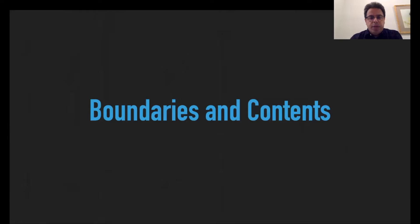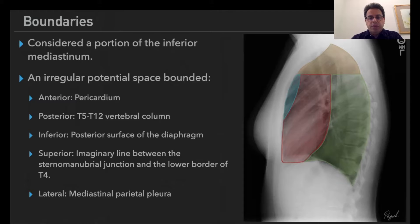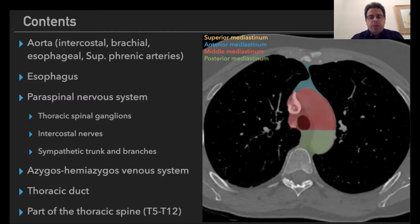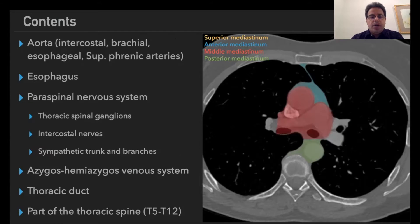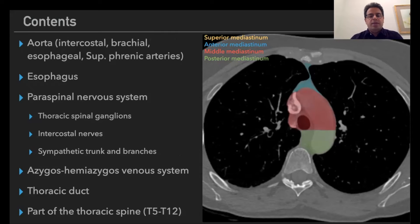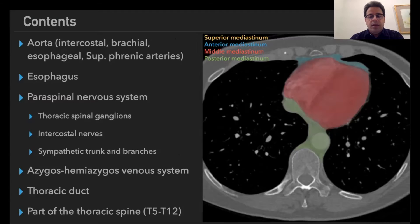The posterior mediastinum is a potential space with boundaries that communicates with the retropharyngeal space via the superior mediastinum and communicates with the intra-abdominal cavity via the diaphragmatic hiatus. There are different contents within the posterior mediastinum: the descending thoracic aorta, the azygous system, nervous structures, the azygoesophageal venous system, and the thoracic duct and cisterna chyli.